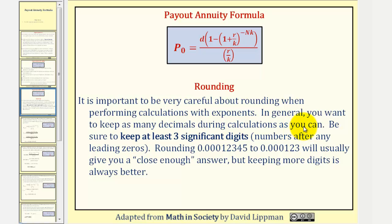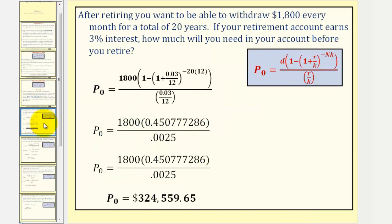Now let's take a look at two types of examples. After retiring, you want to be able to withdraw $1,800 every month for a total of 20 years. If your retirement account earns 3% interest, how much will you need in your account before you retire?